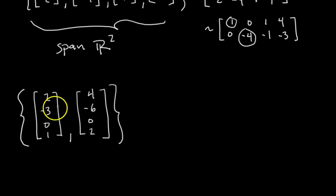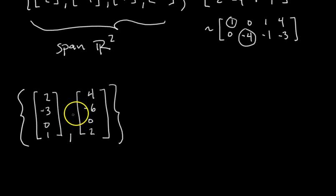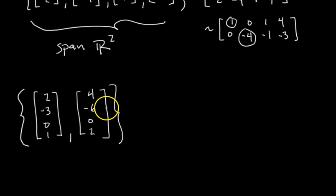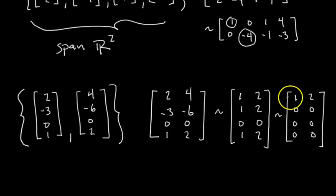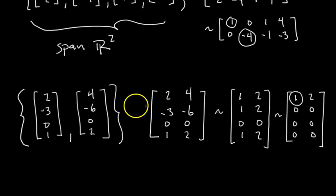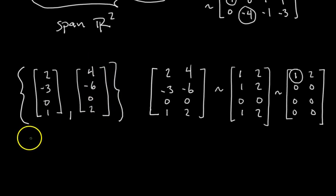What is the span of these two vectors in R4? Two vectors can at most span a plane, or if they're collinear, only a line. You can check if the two vectors are scalar multiples of each other — if they are, they span a line; if not, a plane. But I'll show you that this technique still works. After row reducing, like we could have predicted by seeing they are scalar multiples of each other, we only get one pivot, which means the span is a line — a one-dimensional span.